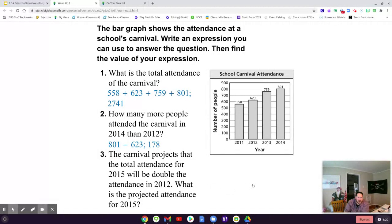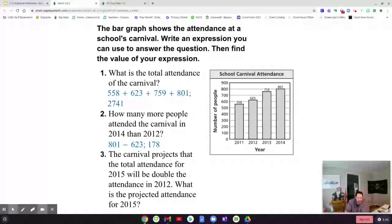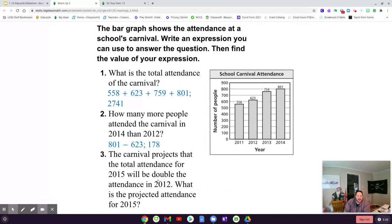And the third question. The carnival projects that the total attendance for 2015 will be double the attendance in 2012. What is the projected attendance for 2015? This one is a little tricky. So, when you are doubling, you are going to be multiplying by 2. Now, you are going to be multiplying the attendance in 2012 times 2. So, which operation should give you the projected attendance in 2015? Yes. We are going to multiply 623 times 2. And our grand total is 1,246.